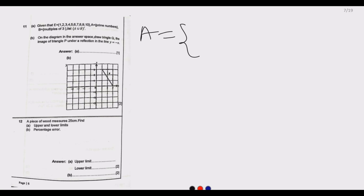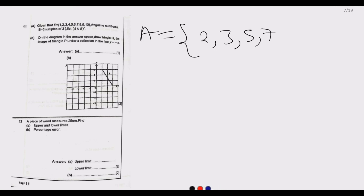Let's start with set A, the prime numbers. Prime numbers are numbers divisible only by one and themselves, excluding one. From the universal set, the prime numbers are two, three, five, and seven. Six is not a prime number, nine is not because three divides it, and ten is not because two divides it. So set A is {2, 3, 5, 7}.